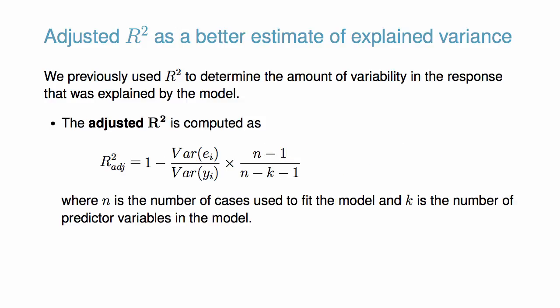The adjusted R-squared is computed as 1 minus the variability in the residuals divided by the variability in the outcomes times the number of cases minus 1 over the number of cases minus the number of parameters minus 1.